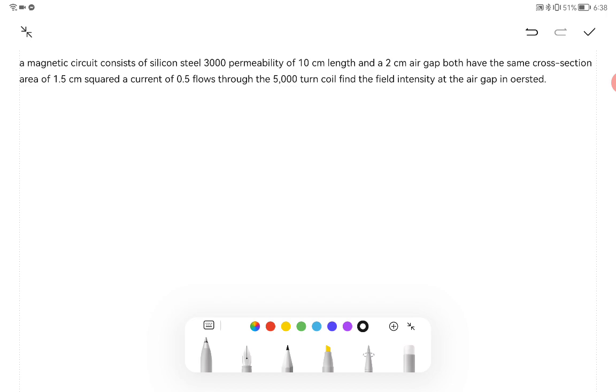A magnetic circuit consists of silicon steel of 3,000 permeability, of 10 cm length and a 2 cm air gap. Both have the same cross-section area of 1.5 cm squared. A current of 0.5 Ampere flows through the 5,000 turn coil. Find the field intensity at the air gap in Oersted.